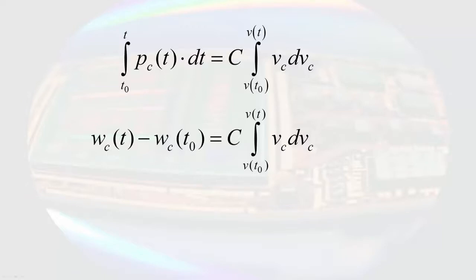And integration of the voltage gives us voltage at time t squared minus the initial capacitor voltage squared. This is a pretty complicated looking equation, so for now let's assume the capacitor initially had no voltage across it and therefore no initial stored energy. Then we can say that the energy stored in the capacitor is proportional to the square of the voltage across it.